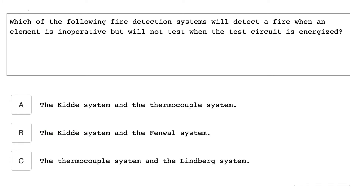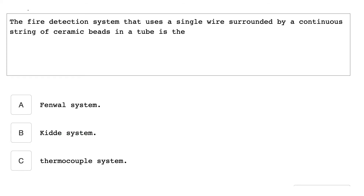Which of the following fire detection systems will detect a fire when an element is inoperative but will not test when the test circuit is energized? The Kidde system and the Fenwall system. The fire detection system that uses a single wire surrounded by a continuous string of ceramic beads in a tube is the Fenwall system.